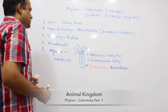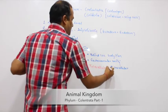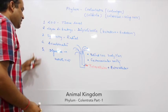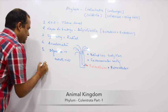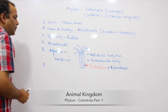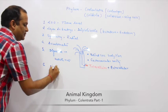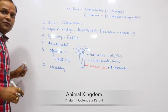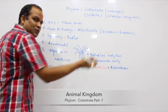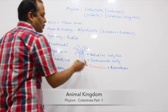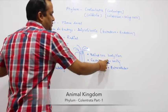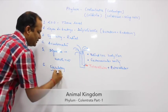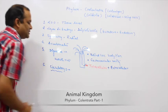So digestion is intracellular plus extracellular, partly inside the cell, partly outside the cell. After digestive system, the next one is circulatory. What happens in the circulatory system? It doesn't exist. Water current is the way circulation occurs - water enters through mouth, goes through gastrovascular cavity, and exits. That is the circulatory system of cnidarians.